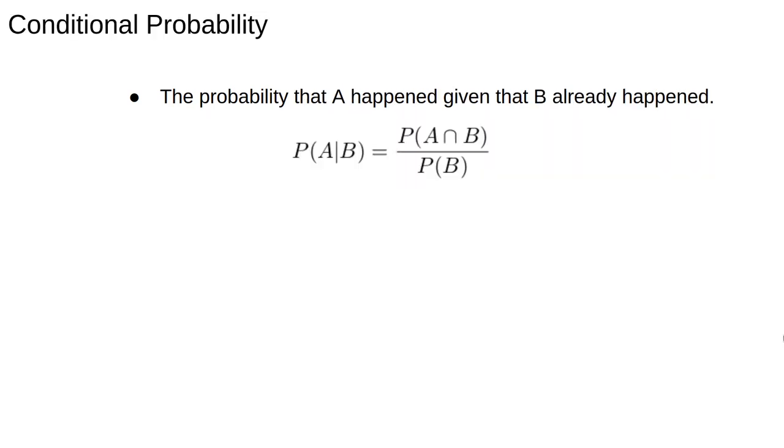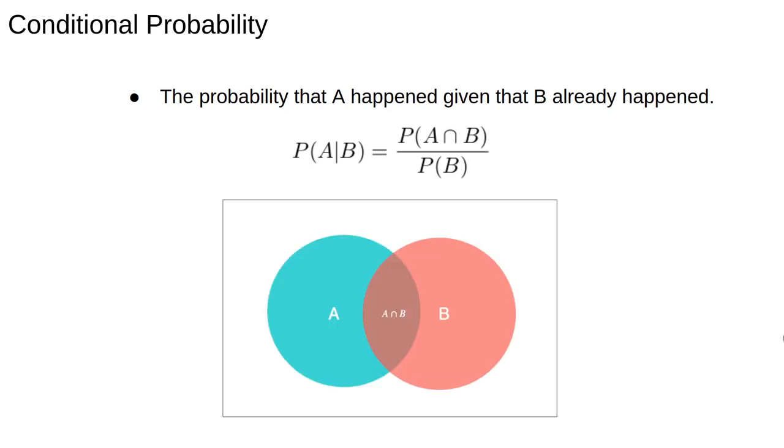The last thing we'll cover is the idea of conditional probability. This is the way to formalize the idea of the probability that A happens given that B already happened. So we have partial information about the event, and based on that partial information, we have to update our probabilities. So conditional probability is written with the bar, and P(A|B) is read as the probability of A given B. So this probability can be expressed as the ratio of probabilities.